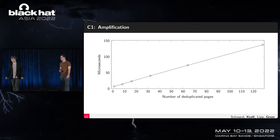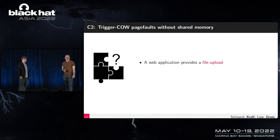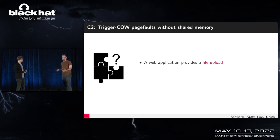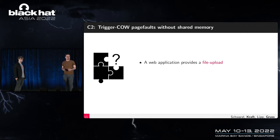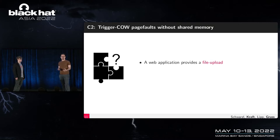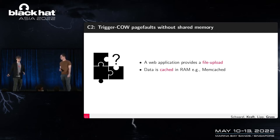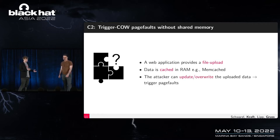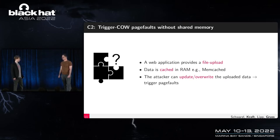For the second challenge — triggering copy-on-write page faults without shared memory — one solution is file upload: some websites offer file upload where files are buffered in the page cache. If there is also an override/update operation, you can use this as the leakage primitive. We tried this with memcached: data is cached in RAM without being written back to disk, and the attacker can update or overwrite the uploaded data to trigger those page faults.